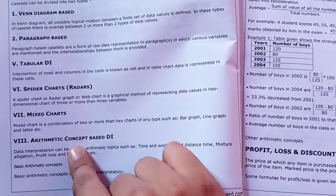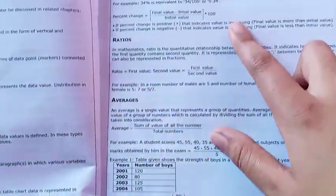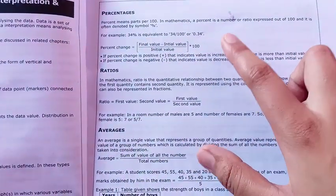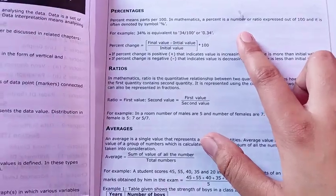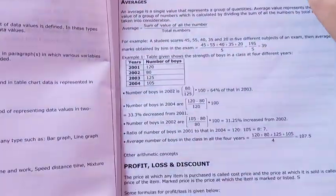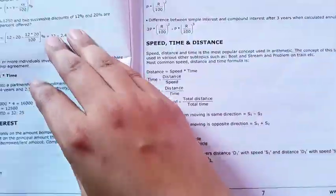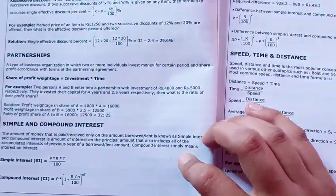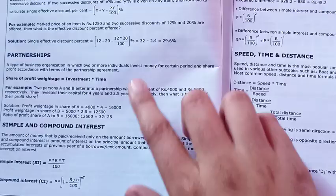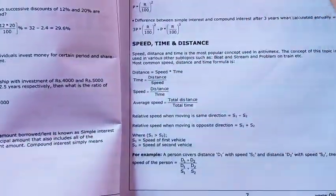First you need to know which types of DIs are there, and then they have provided the basic concepts like percentages used in solving DIs, then ratios, averages. They have provided these basics and profit and loss. All the basics I think are given: partnership, simple interest, speed, time and distance.